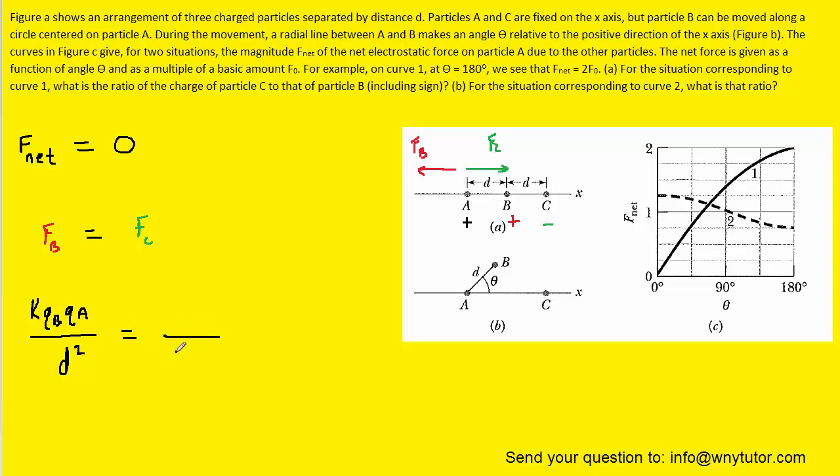When we plug into the formula on the right side, we call that distance 2D, and when we square it, it ends up being 4D squared. The numerator will have K times charge C times charge A. You'll notice that algebraically we can eliminate the K as well as QA, and the D squared can be dropped. Then if we multiply both sides by 4 and divide by QB, we get the ratio equaling 4.